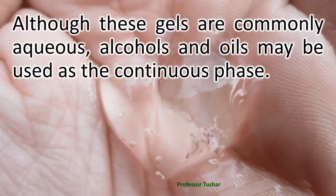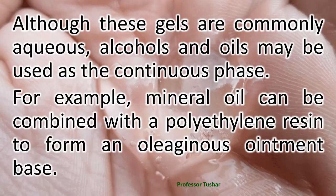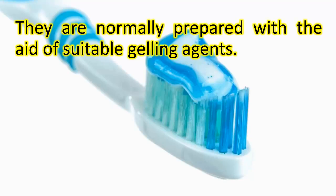Although these gels are commonly aqueous, alcohols and oils may be used as the continuous phase. For example, mineral oil can be combined with a polyethylene resin to form an oleaginous ointment base. They are normally prepared with the aid of suitable gelling agents.